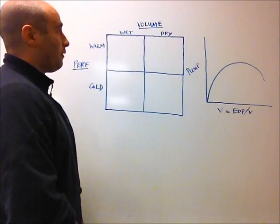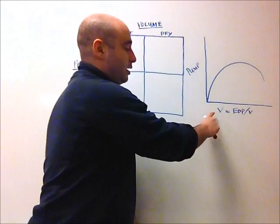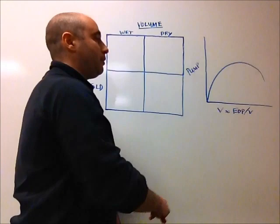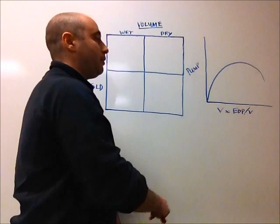So heart failure patients can be classified on two spectrums. The first is volume, where they can range from dry to wet, and then perfusion, where they can range from warm to cold. On the Starling curve, we see that on the x-axis we have volume, which is really a surrogate for end-diastolic pressure and volume, and pump function.